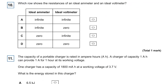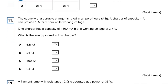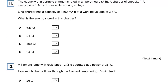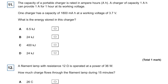Question ten: which row shows the resistances of an ideal ammeter and voltmeter? An ideal ammeter has zero resistance and an ideal voltmeter has infinite resistance. We don't want any current going through a voltmeter, and we don't want any PD being lost across an ammeter.